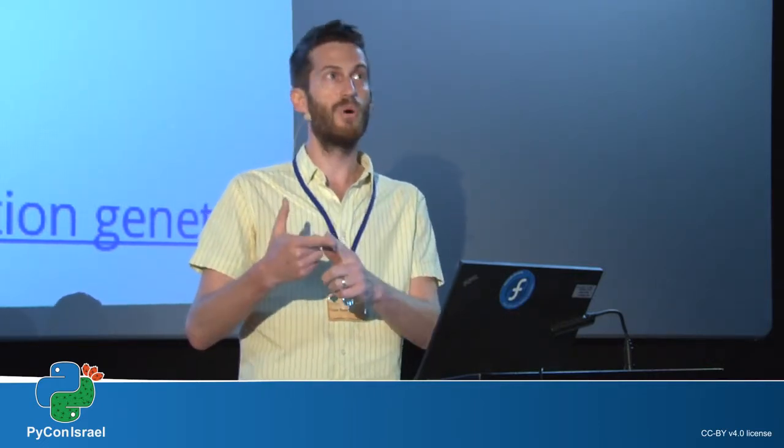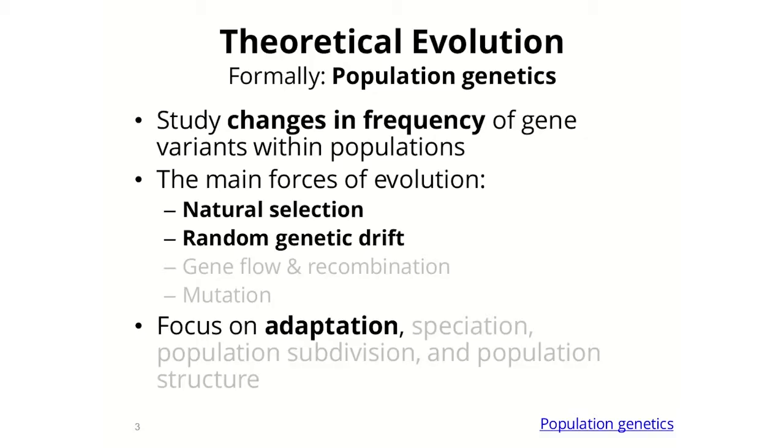What am I thinking about here? Things like the color of eyes — gene variants for green eyes, for blue eyes, for brown eyes — or blood types: A, B, AB, O. These are traits that affect our livelihood, but they are genetically encoded and transferred from parents to offspring. The main forces of evolution we consider are natural selection, random genetic drift, and other forces like gene flow or mutation.